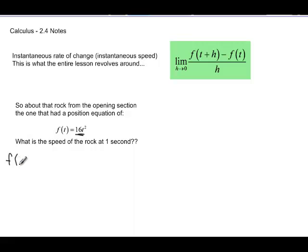And then we need to look at f at t plus h. Those are the two things that we need to check out. In this case, they're telling us that t is equal to 1. So f of t is going to be 16 times 1 squared, which is 16.